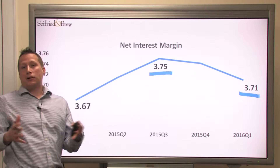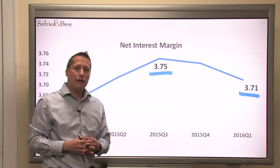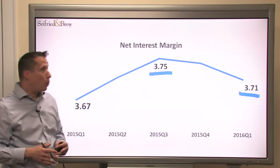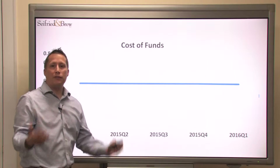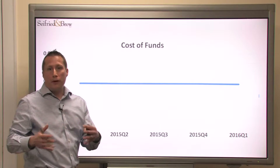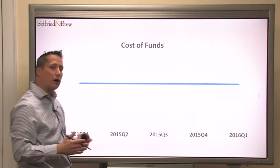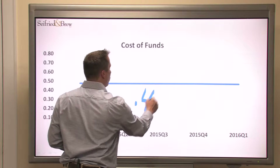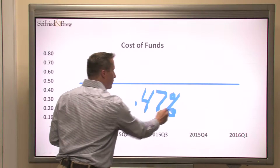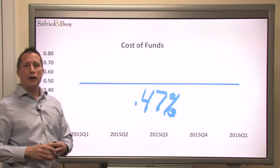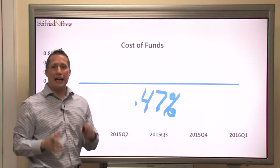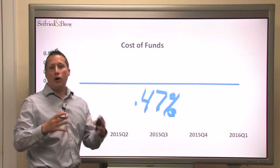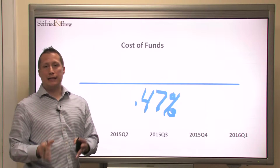Now we have to ask ourselves why is this occurring, and there are a number of different reasons. One could be the overall cost of funds. However, what we've seen is that the cost of funds is basically flatlined at 0.47%. This is where we've been throughout the last five quarters, so you could say that the cost of funds play has ended.